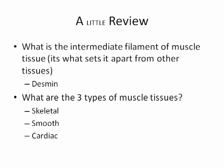A couple things that we already know about muscles is that the main intermediate filament type associated with muscle tissue of all kinds is desmin. Each tissue type has its own specific type of intermediate filament that makes up the cytoskeleton, and desmin is the choice for muscle.